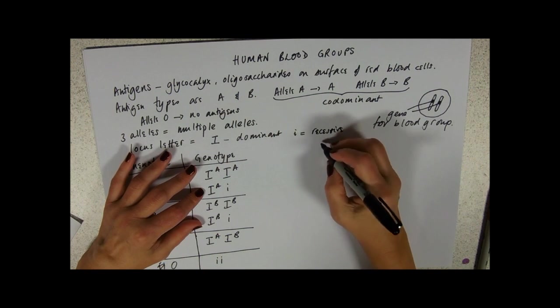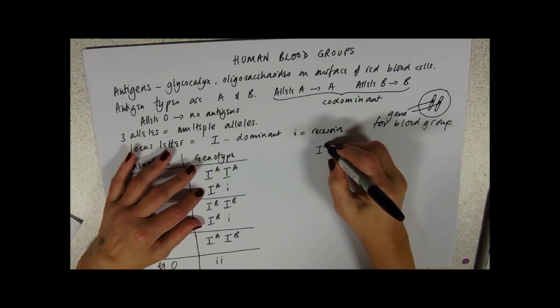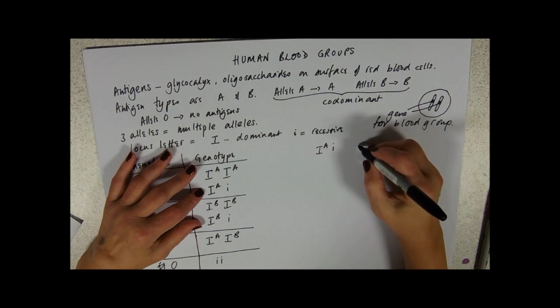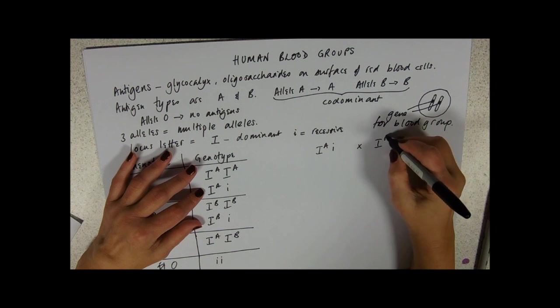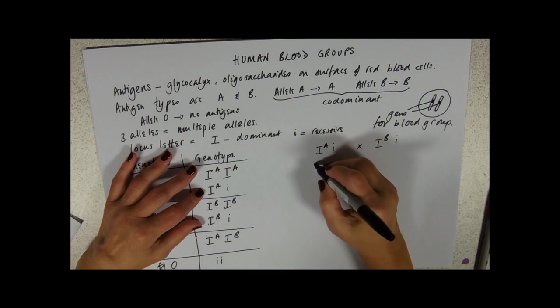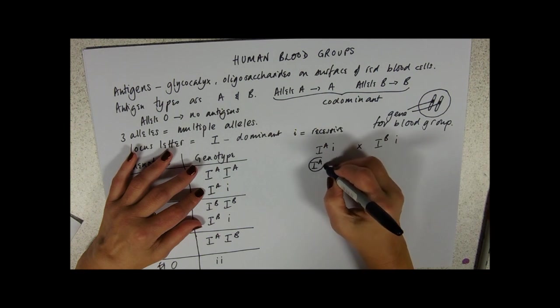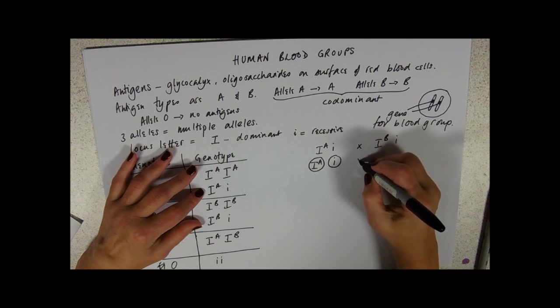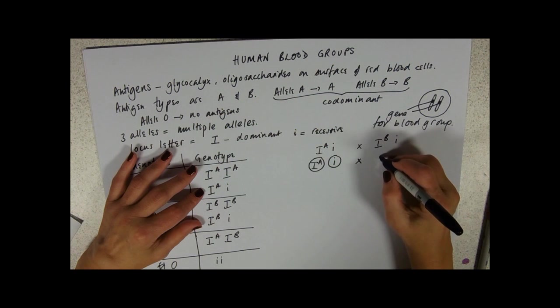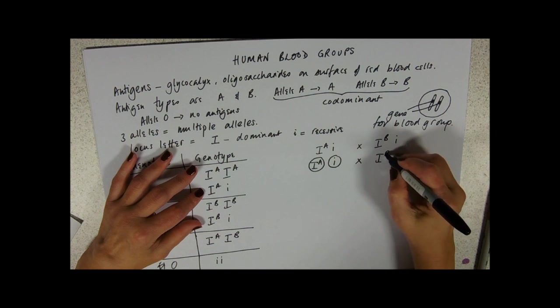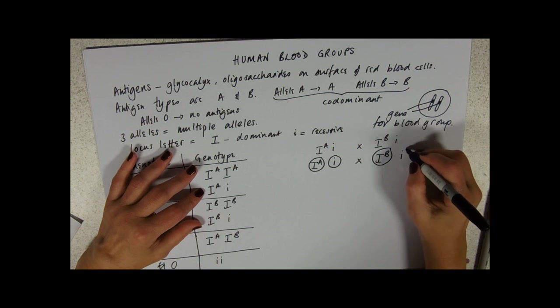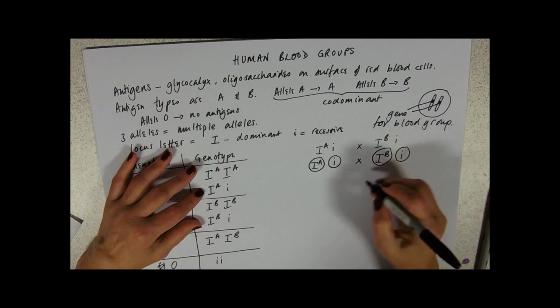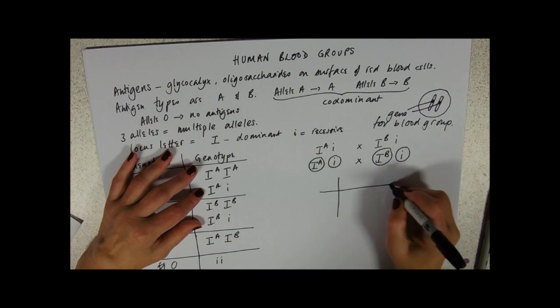Probably the most complicated cross you could do would be between two heterozygotes. So if we've got a heterozygote for blood group A crossed with a heterozygote for blood group B, the blood group A person is going to produce A allele gametes and O allele gametes. Put my cross sign in there just to keep everything tidy, make sure I don't make a mistake. IB gametes, i gametes, into the Punnett square we go.